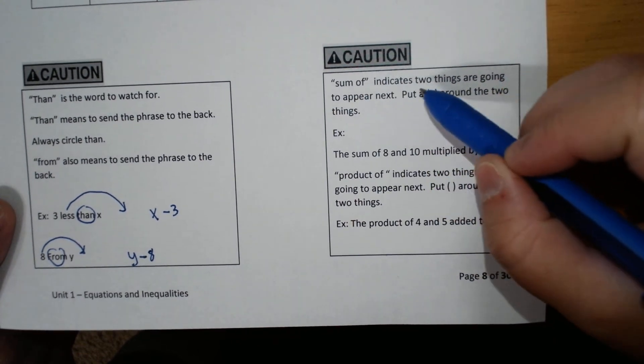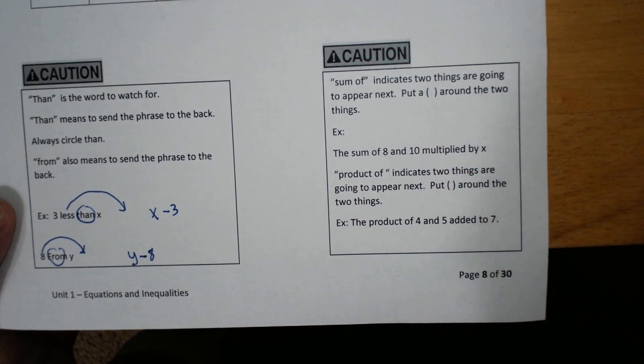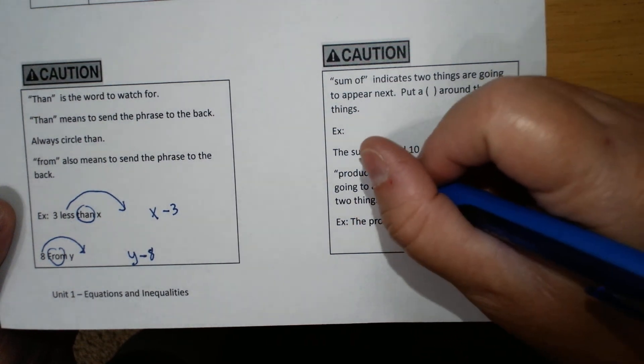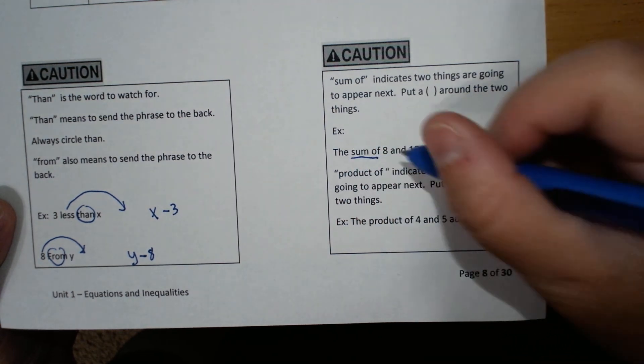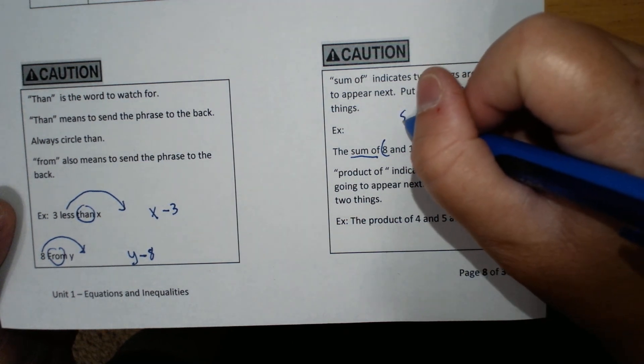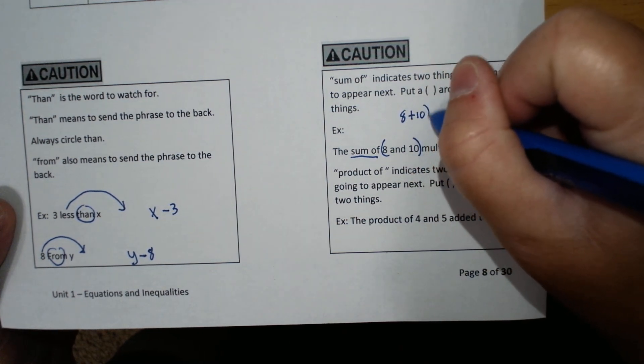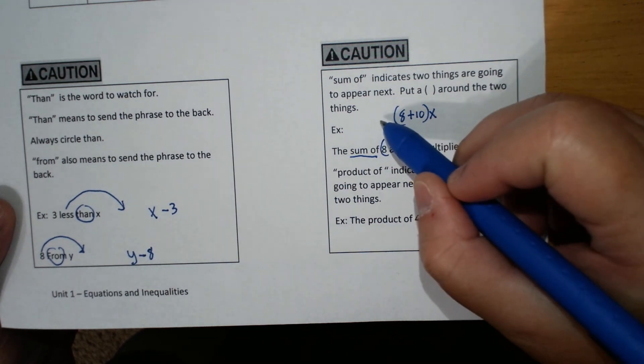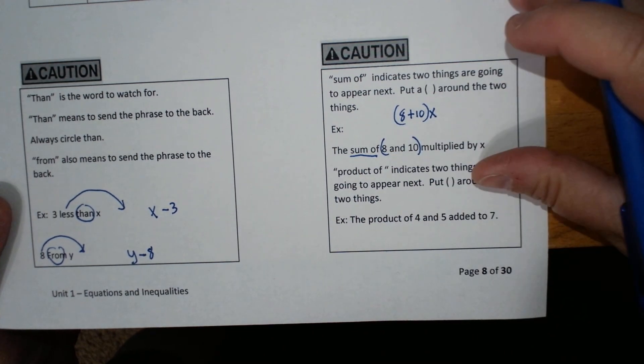Sum of indicates two things are going to appear next. Put a parenthesis around the two things. The sum of eight and ten. So you underline sum of. You put eight and ten in parentheses, multiplied by X. So sum means add. And then you're multiplying it by X. And that X can actually come out front. That's actually how it would be done.